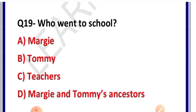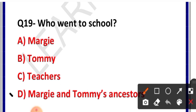Question number 19: Who went to school? Options: Margie, Tommy, teachers, or Margie and Tommy's ancestors. Correct answer is option D — Margie and Tommy's ancestors. Margie aur Tommy ke jo poorvaj the, unke dada ke bhi dada the, woh log school jaate the padhne ke liye. 2157 mein jo yeh kahani le jaati hai, us age mein bachchey yahi kahenge ki humare dada ke dada school mein padhne ke liye jaate the.